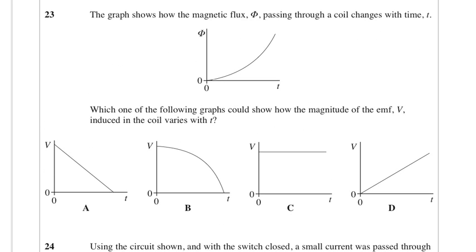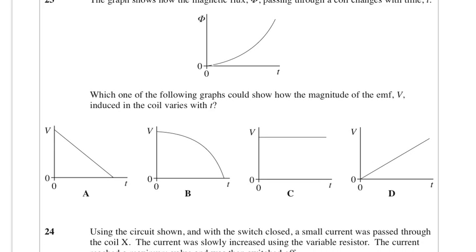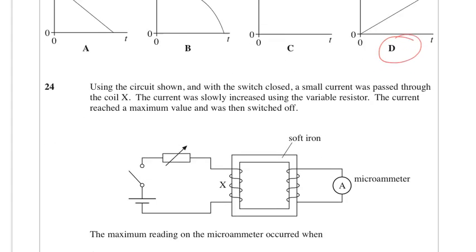The graph shows how the magnetic flux passing through a coil changes with time. Which graph shows how the magnitude of EMF induced varies? We can see the gradient is increasing, so the rate of change of flux is increasing. So the only one that shows that is option D, because your EMF is increasing, which shows the rate of change of flux is increasing.